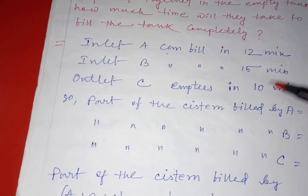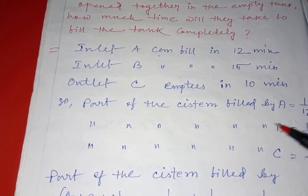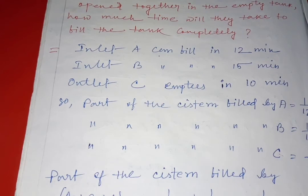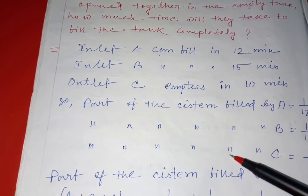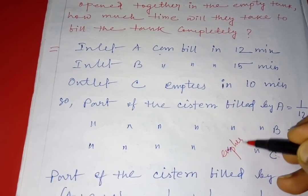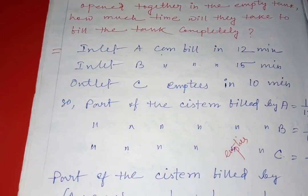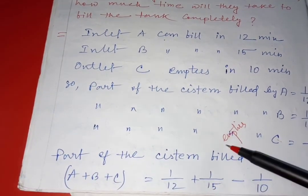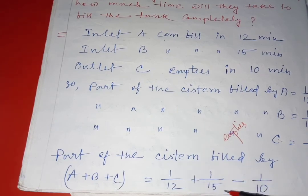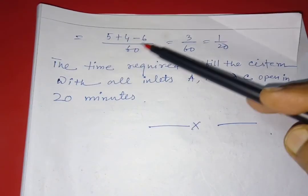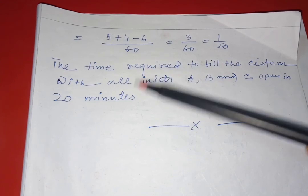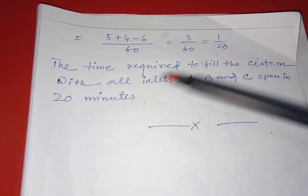Part of the cistern filled by A is 1 by 12, part filled by B is 1 by 15, and part emptied by C is minus 1 by 10. The net part of the cistern filled by A plus B plus C equals 1 by 12 plus 1 by 15 minus 1 by 10, which gives 5 plus 4 minus 6 by 60, that is 3 by 60, equal to 1 by 20. So the time required to fill the cistern with all inlets A, B, C open is 20 minutes.